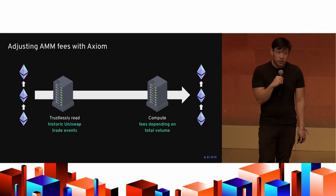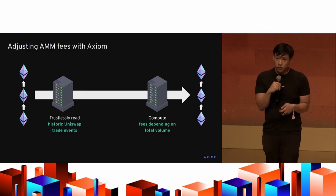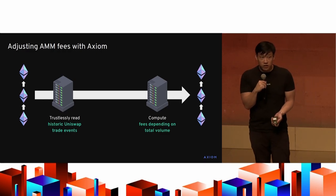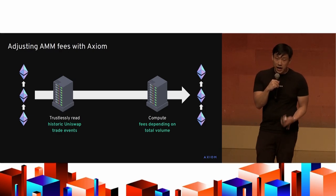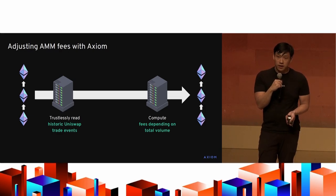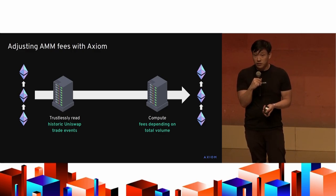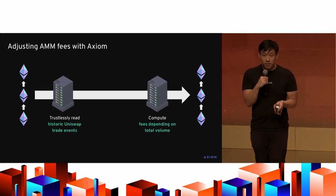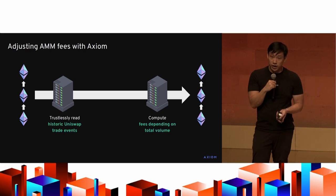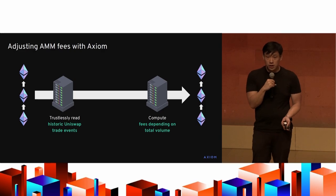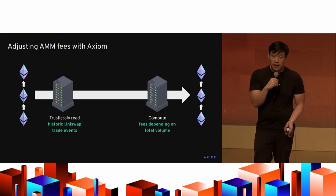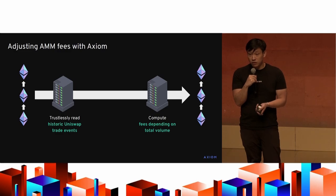In DeFi, you might imagine adjusting fees for historic participation. In standard exchanges like Binance and NASDAQ, higher-volume traders get a fee rebate, but in DeFi today everyone gets the same fee — which violates basic economics. The only reason it hasn't happened on-chain is that AMMs can't know how much their users have traded. To implement this with Axiom, you trustlessly read the trade events of your users on-chain, add them up, and apply the appropriate discount to fees.